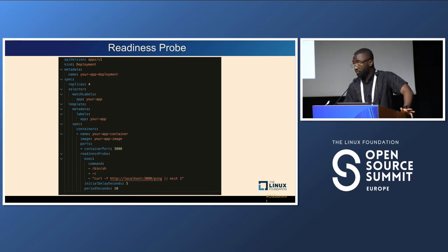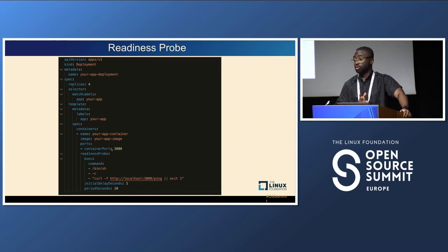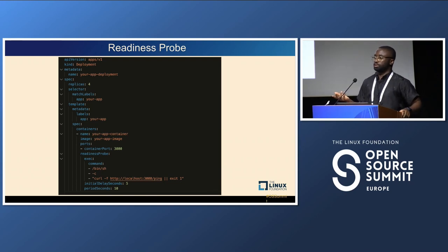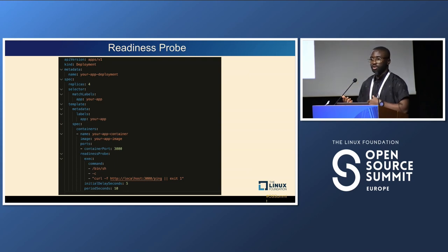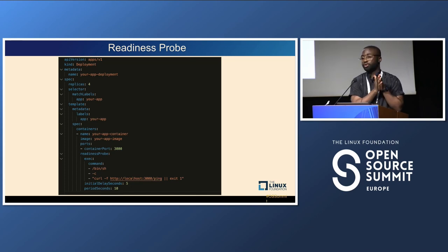Here's a manifest file for a demo deployment with a readiness probe. The readiness probe runs the command curl localhost:3000 — the port of the container — and pings it. If this returns exit zero, it means the container is not ready to serve traffic. It has an initial delay of five seconds and a period of ten seconds, so after ten seconds it tries again. When the request is successful, you know the container is ready to take traffic.